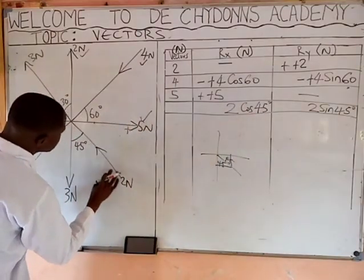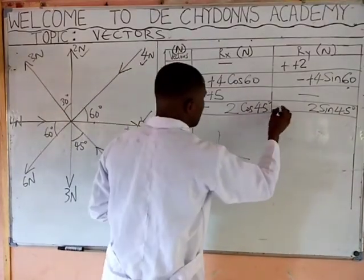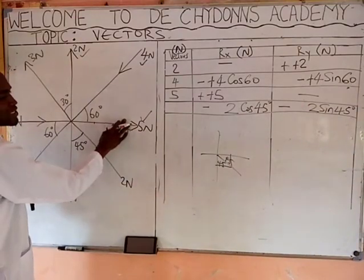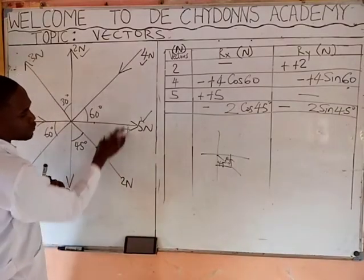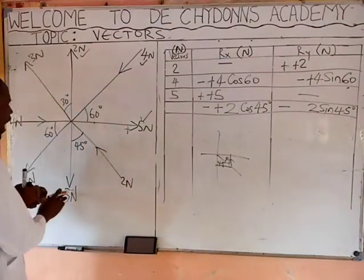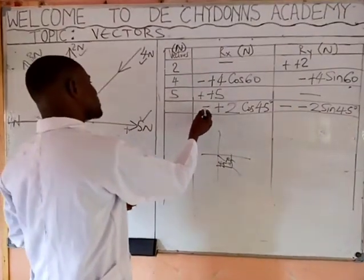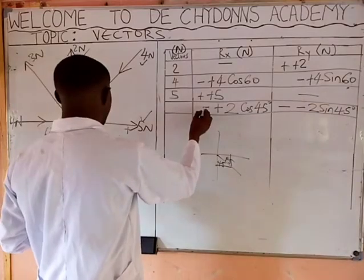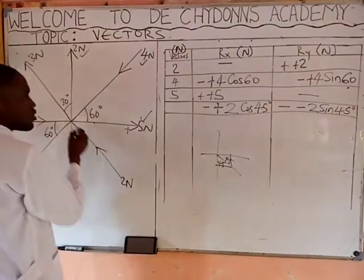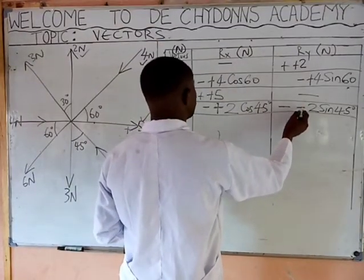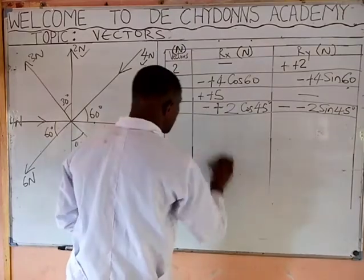For the y-axis component, use sine. The minus is for the direction of the arrow itself pointing inward. When you resolve to the x-axis, that is positive x, so put plus. When you resolve to the y-axis, that is negative y, so put minus. So: one minus is for the arrow direction, one for the x-axis Cartesian sign, and one for the y-axis Cartesian sign. We are done with the 2 Newton vector.